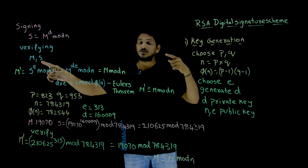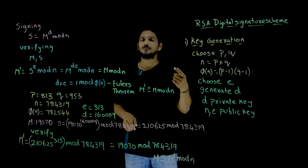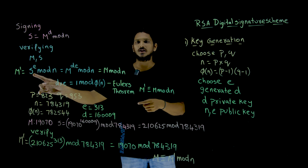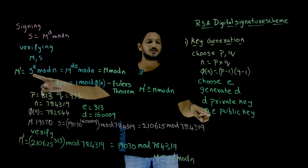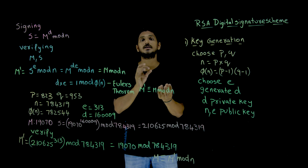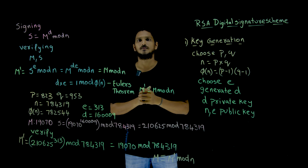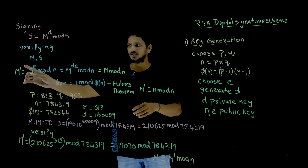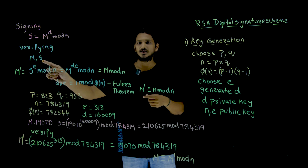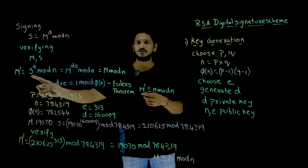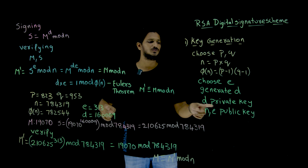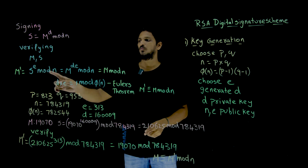How is the receiver going to verify, given that he has both the message and the signature? By using the signature and the public keys, he has to generate M dash. So M dash is generated as follows: given the signature, compute signature power E — which is the public key — mod N.